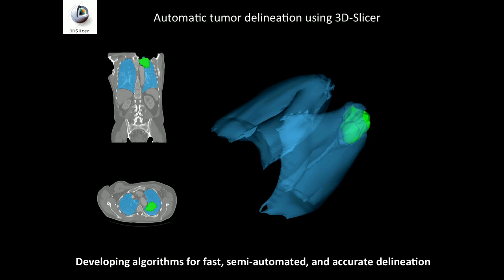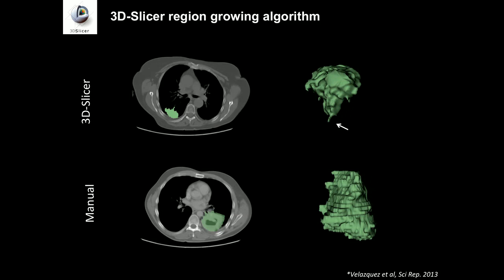We are doing this within 3D Slicer, looking at different algorithms for fast, automated, and semi-automated target definition. We want tools that are completely automated but also very interoperable and fast for when a radiologist goes in. Using a region-growing algorithm, semi-automatic segmentation in 3D can capture very fine extensions of a tumor because it works in a 3D manner — not slice by slice. Manual segmentation shows a very noticeable slice-by-slice effect.